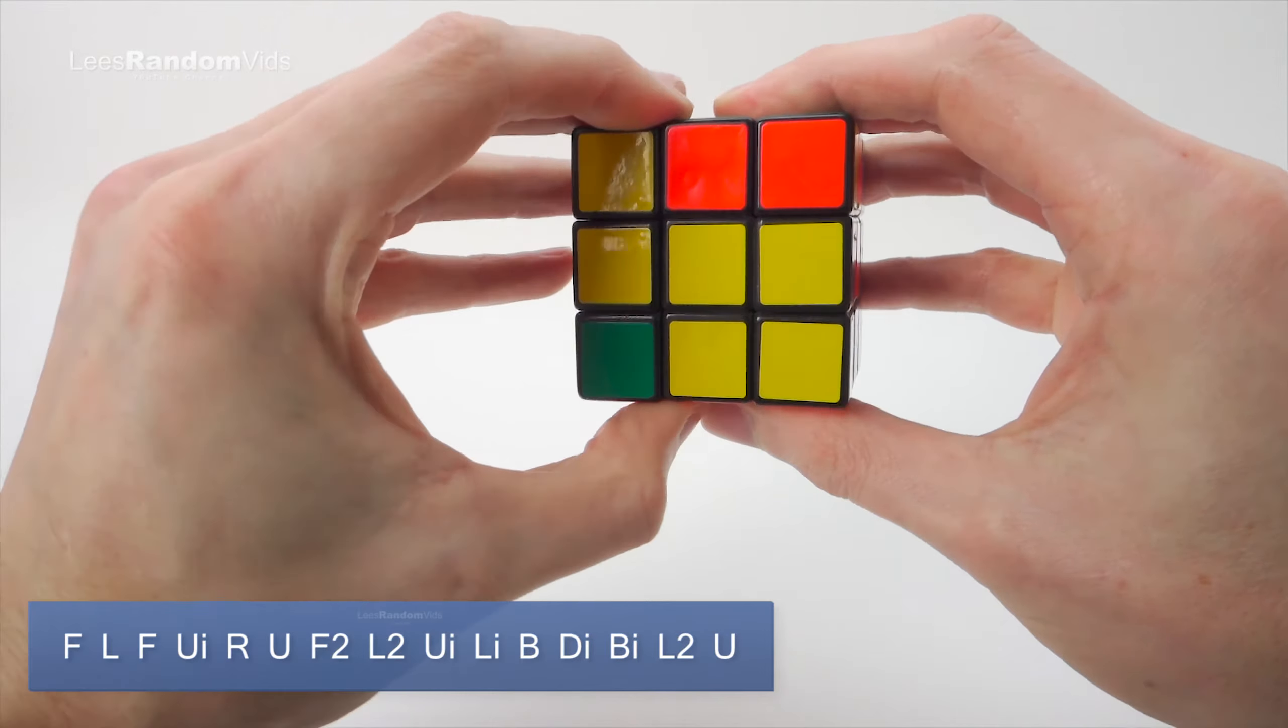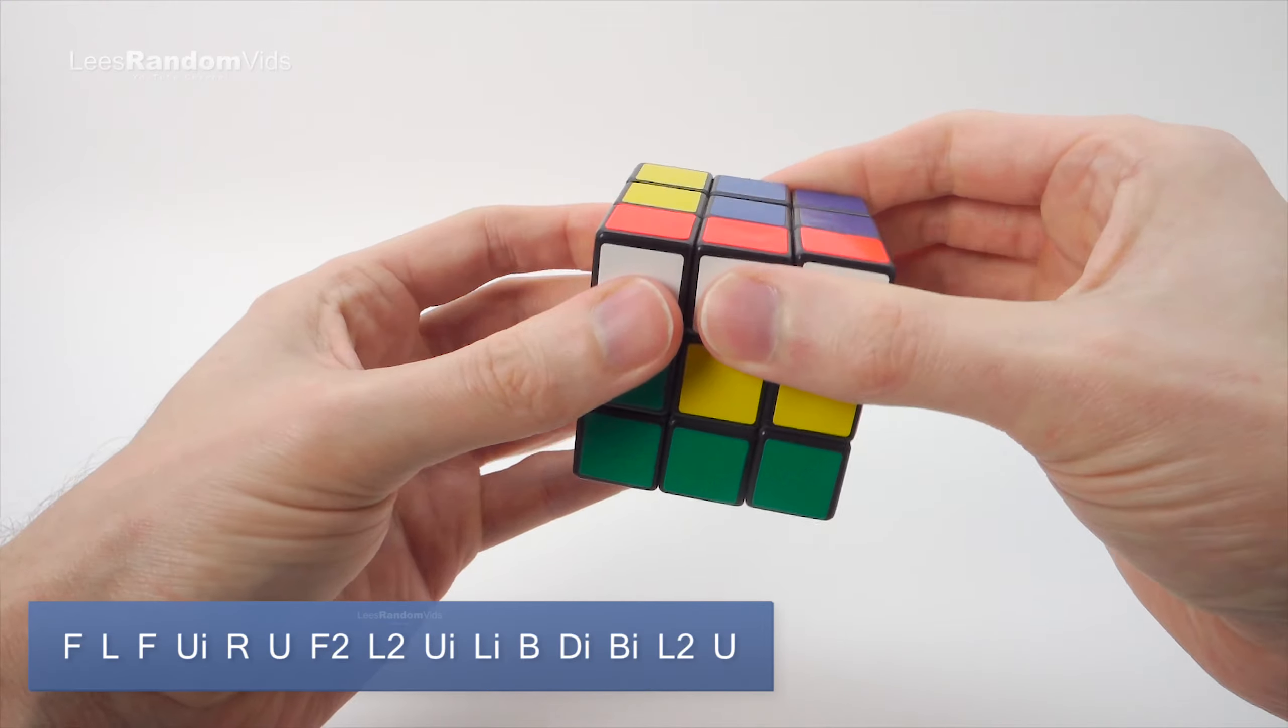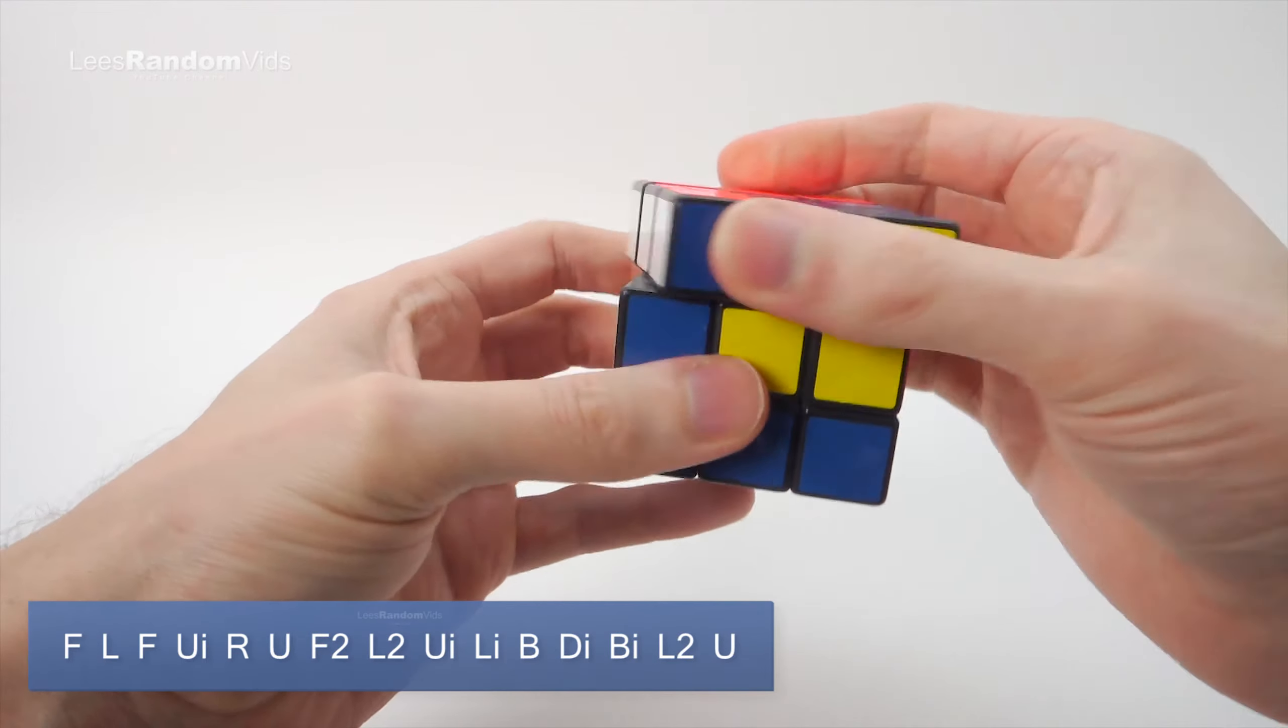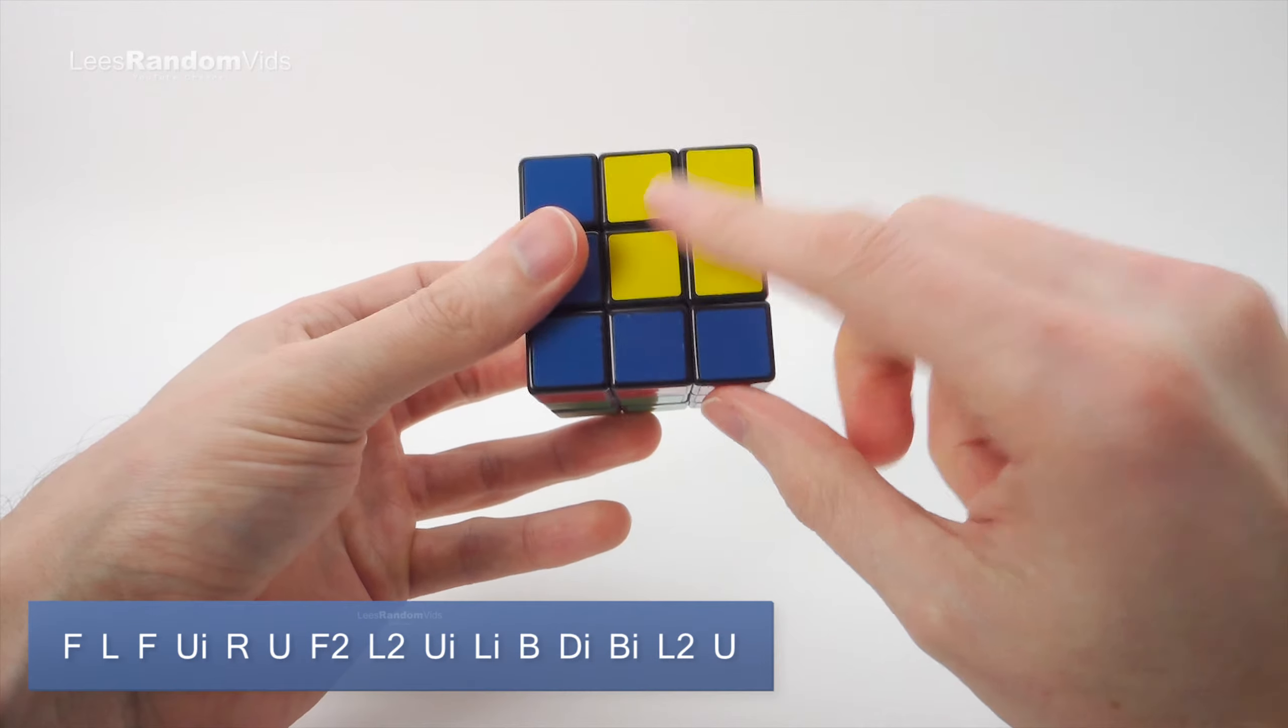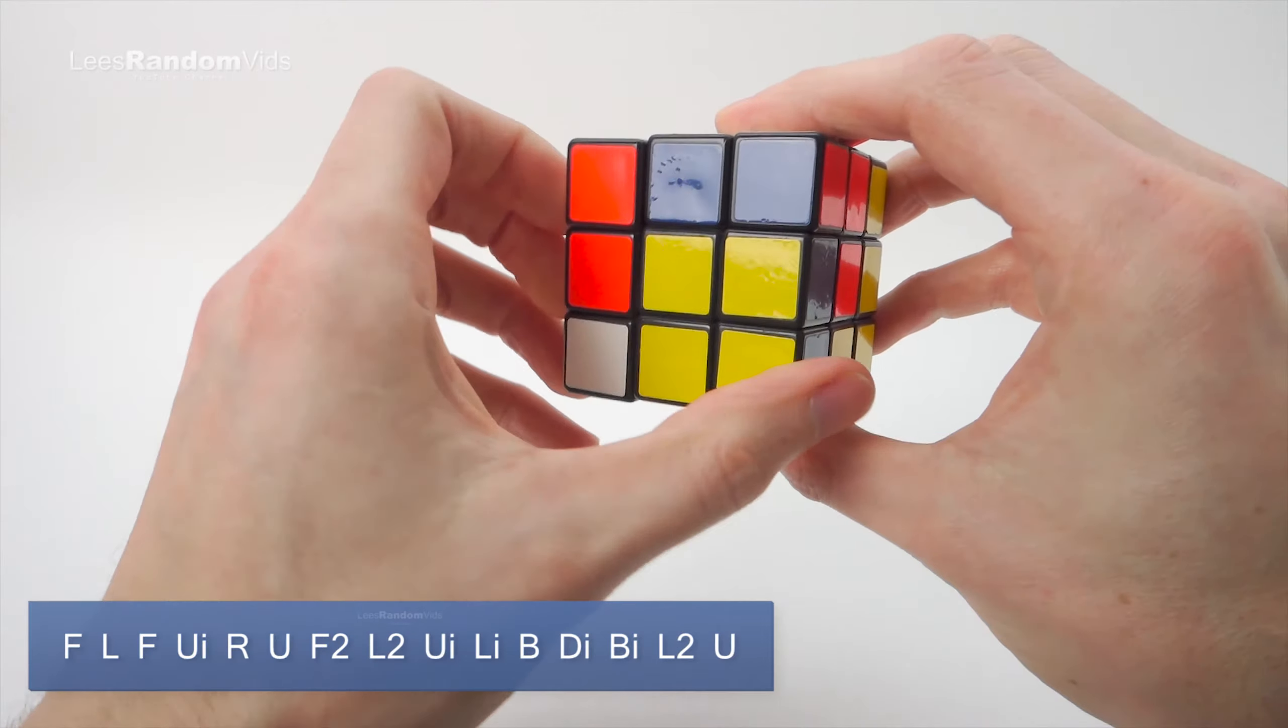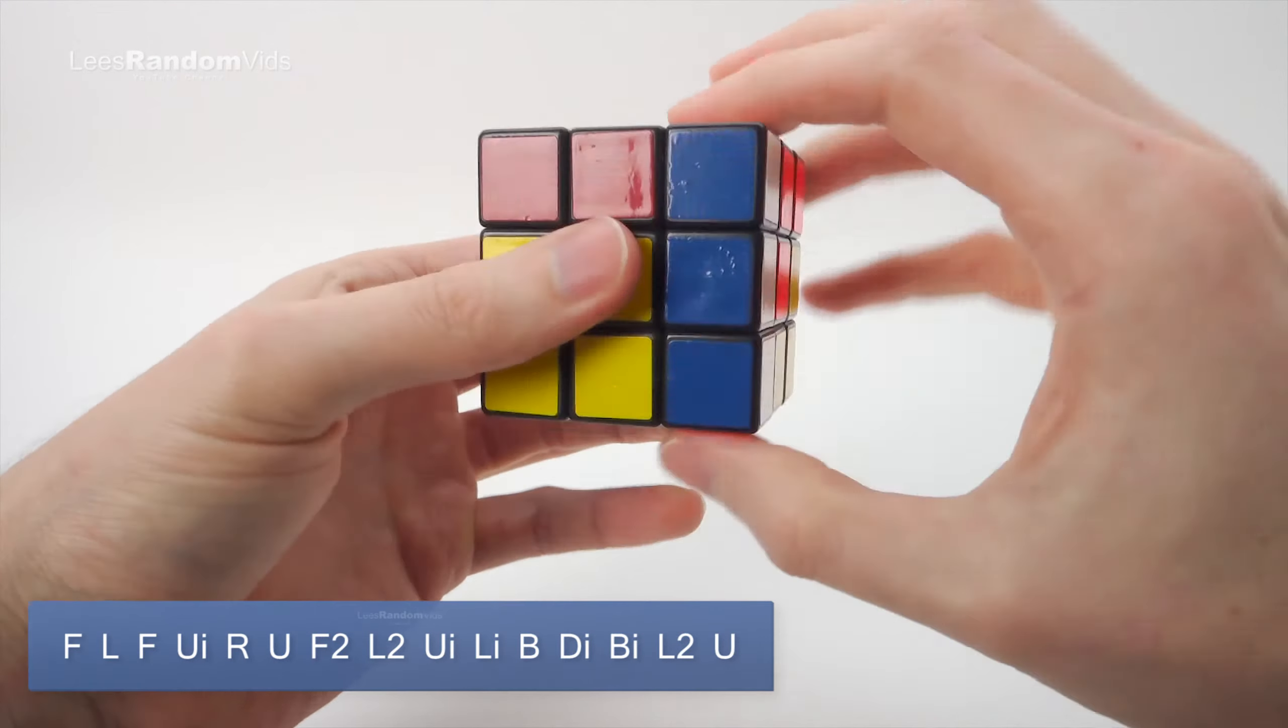So let's do that then. This is our front face because the small cube is in the top right. And we'll repeat the same algorithm. So we go F, L, F, U', R, U, F2, L2, U', L', B, D', B', L2, U. And we've still got the cube in a cube but the colours are rotated.